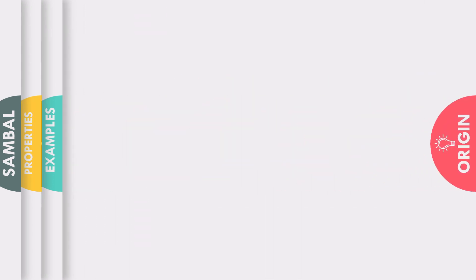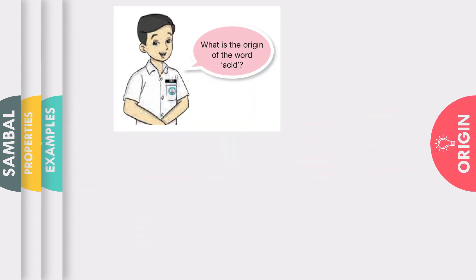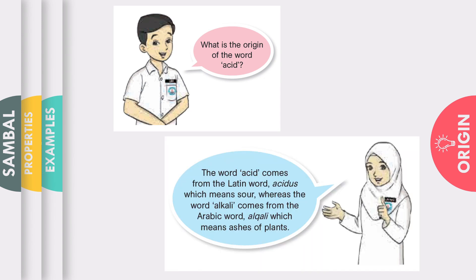Do you know that the word acid actually comes from a Latin word, Acidus, which means sour. Meanwhile, alkali comes from an Arabic word, Al-Qali, which means the ashes of plants.